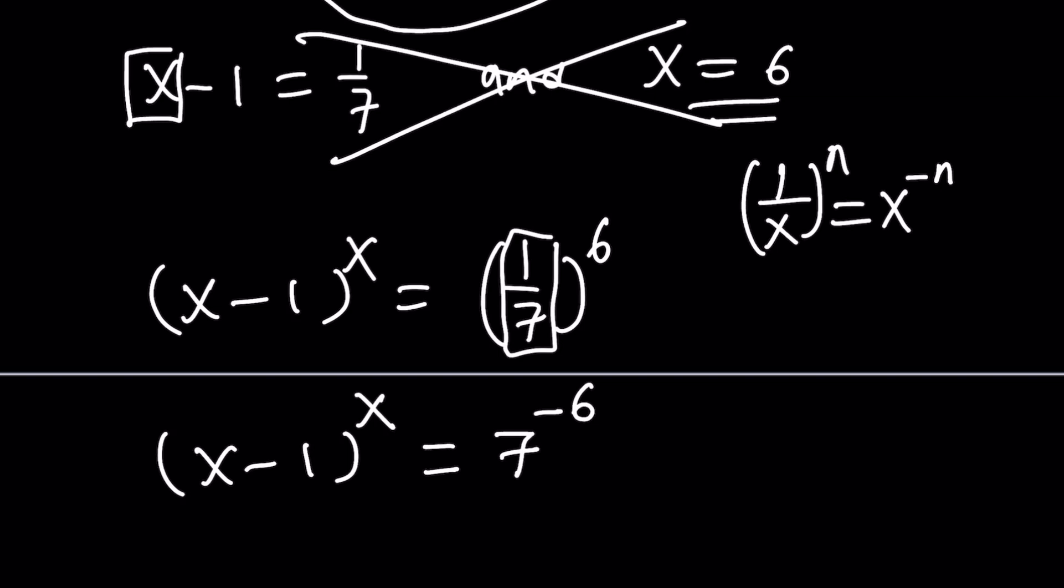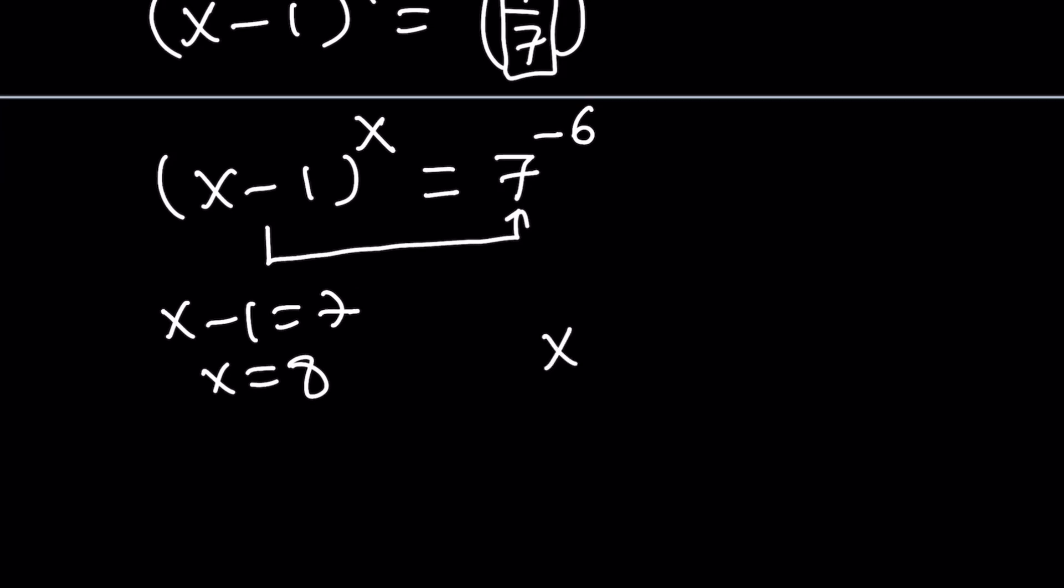Now, do we have a correspondence? Let's see. Can x minus 1 be 7? Which means x is 8 and x equals negative 6 at the same time. And the answer is no. It's impossible.